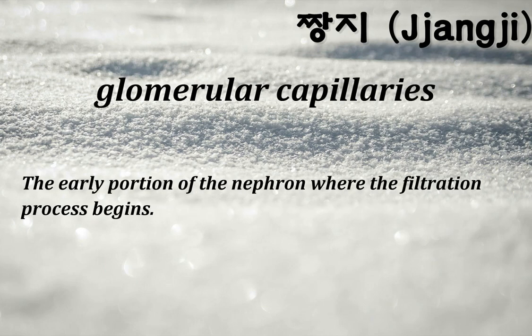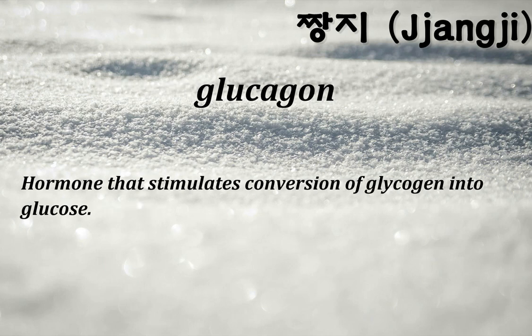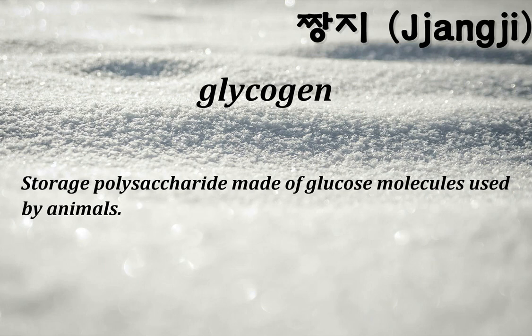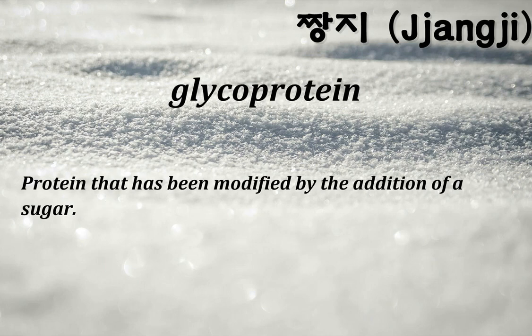Glomerular capillaries: the early portion of the nephron where the filtration process begins. Glucagon: hormone that stimulates conversion of glycogen into glucose. Glycerol: a 3-carbon molecule that combines with fatty acids to produce a variety of lipids. Glycogen: storage polysaccharide made of glucose molecules used by animals. Glycoprotein: protein that has been modified by the addition of a sugar.